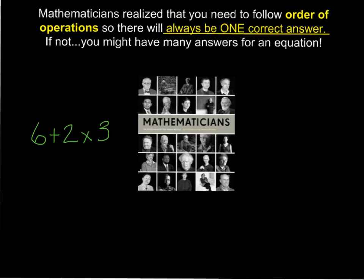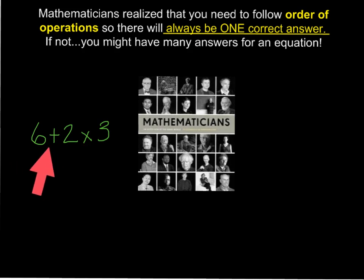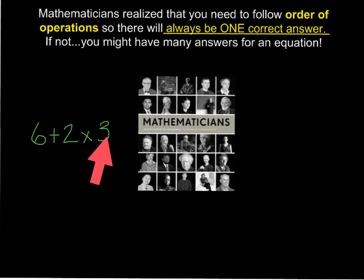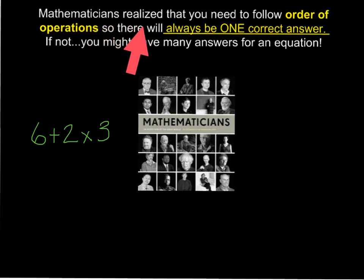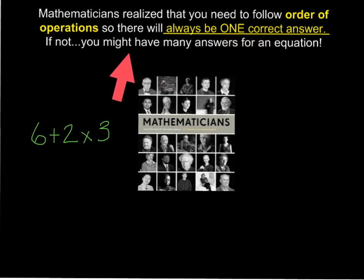First of all, I want to talk to you about the history of order of operations. If you look at this equation right here — 6 plus 2 times 3 — many people might get different answers. Some people might say 6 plus 2 is 8, and then 8 times 3 is 24. Other people might say 2 times 3 is 6 first, and then 6 plus 6 is 12. Well, 12 and 24 are not the same answer. So mathematicians realized that you need to follow order of operations so there will always be one correct answer. If not, you might have many answers for an equation. So tonight we're going to talk about the order of operations so everyone will have the same answer.